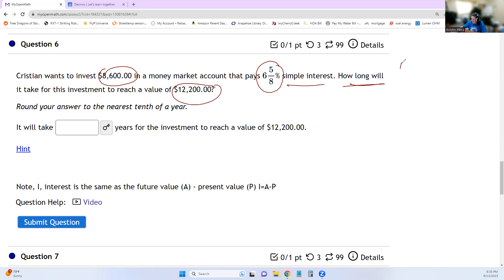So one of the formulas that we see is I, that's the total interest, equals P, that's the starting value, RT. So in this problem, they told us that the P, the present value, the starting value, that's the amount that they want to invest, is 8,600. The interest rate is equal to 6 and 5 eighths percent. The time is what we don't know. We're looking for that. And we want to know how long it takes to reach that final value, the future value, or sometimes it's written as an A, of 12,200.